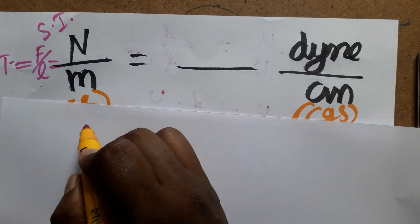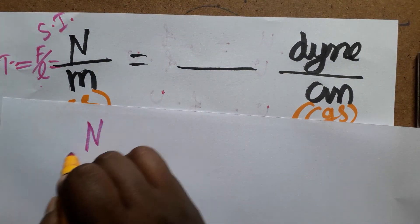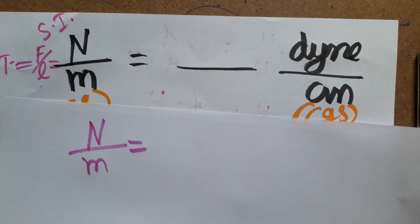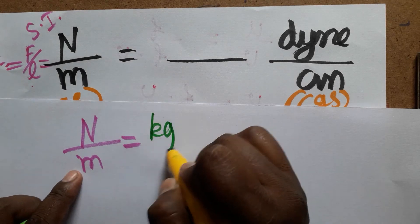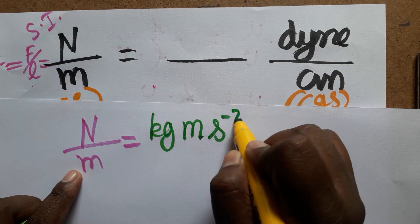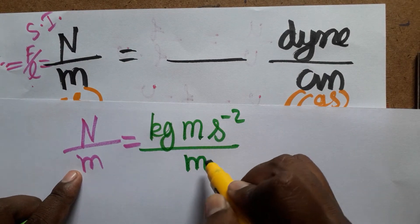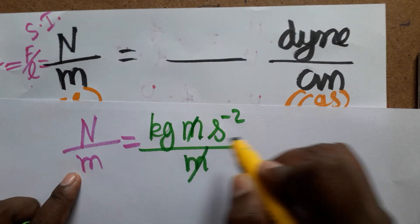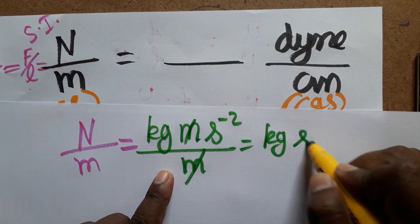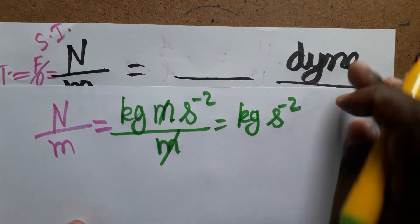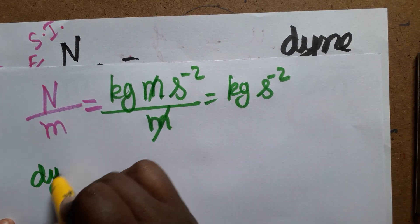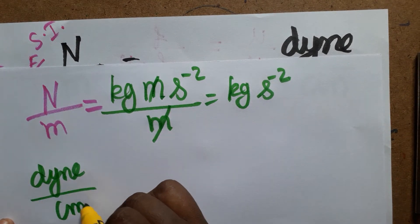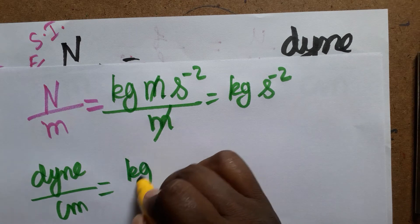Now we are going to convert newton per meter to dyn per centimeter. Newton per meter becomes kg·m·s⁻² divided by meter, which simplifies to kg·s⁻². On the other side, we have dyn per centimeter.